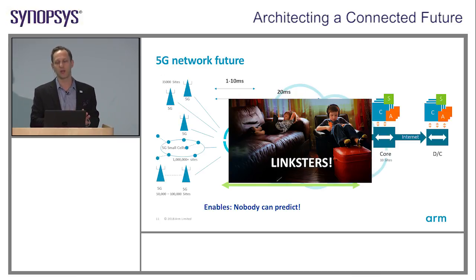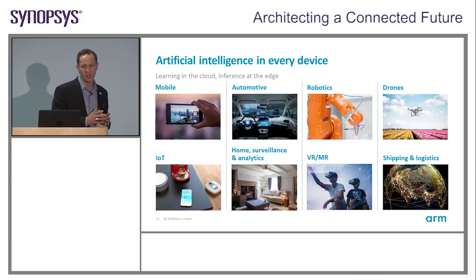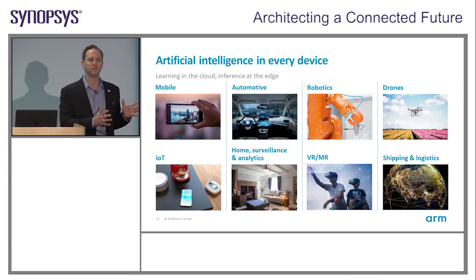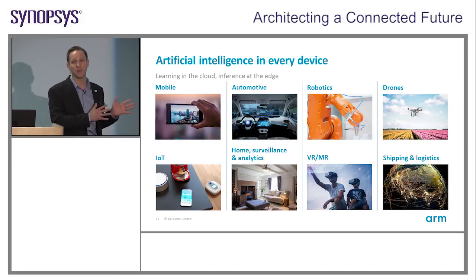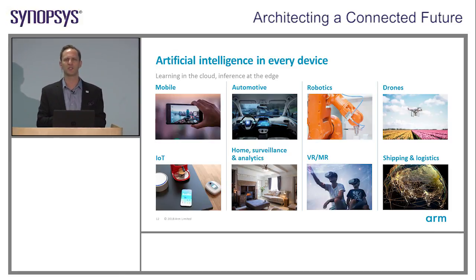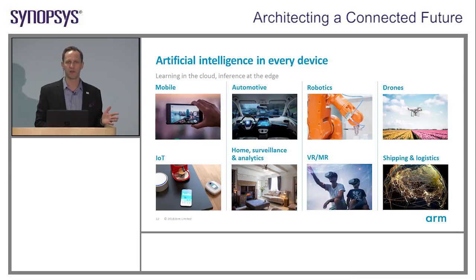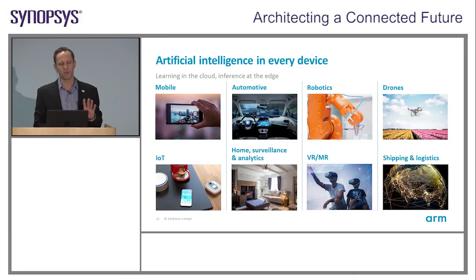This brings us to key trend number two: artificial intelligence and machine learning — I'll use those terms largely interchangeably. We think machine learning is going to impact every market. It's much easier to figure out which markets it won't impact than which markets it will, because it's going to impact nearly everything. From a mobile phone — voice recognition, face recognition, augmented reality — those are the obvious cases. Self-driving autonomous cars will require extensive machine learning. But it extends far beyond that as well.